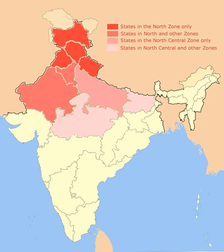In Mumbai, the term 'North Indian' is sometimes used to describe migrants from eastern Uttar Pradesh and Bihar, often using the term 'bhaiya,' which literally means 'elder brother,' in a derogatory sense. However, these very people are not considered North Indian by the inhabitants of Punjab, Himachal Pradesh, Uttarakhand, Haryana and Rajasthan.